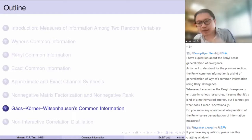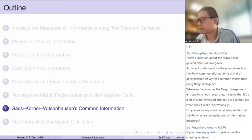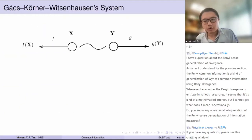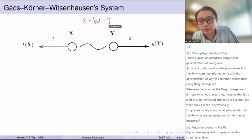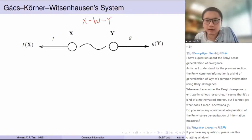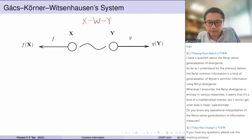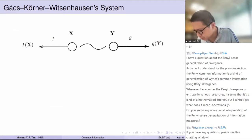You will see that there is a family of other conjectures that we will talk about and have no resolution for. We have only talked about the Wyner's common information problem, which was concerned with the system with the Markov chain X-W-Y. There is a whole other common information study due to Gács, Körner, and Witsenhausen.